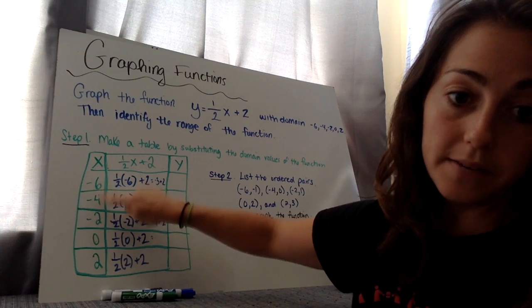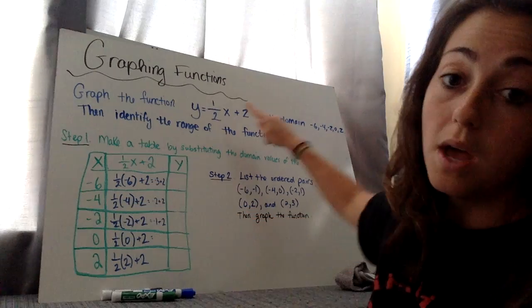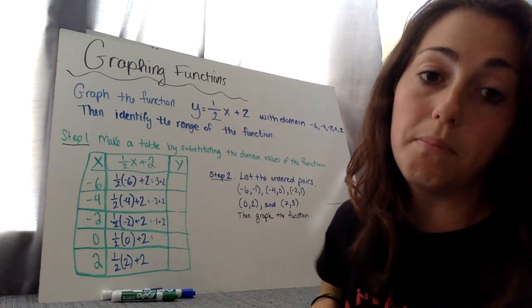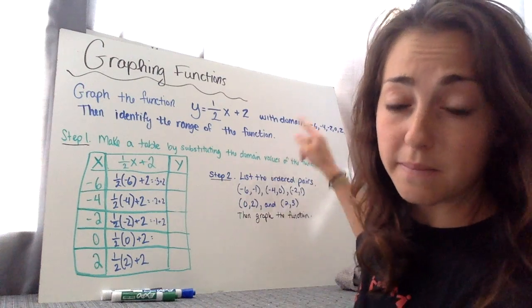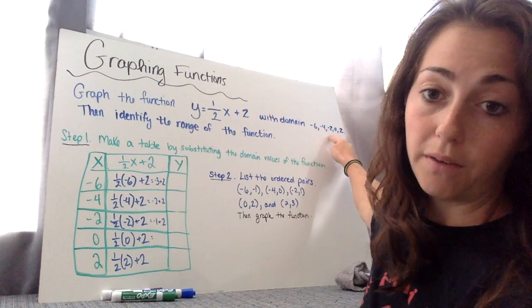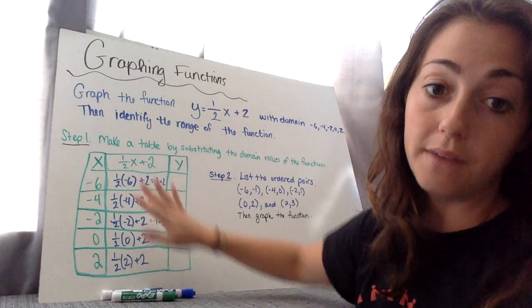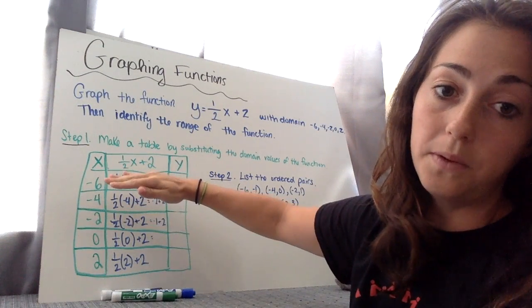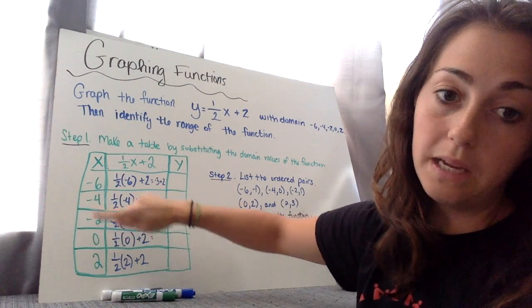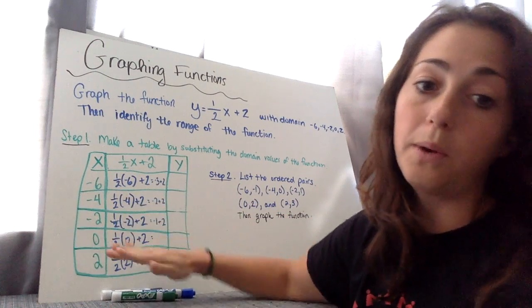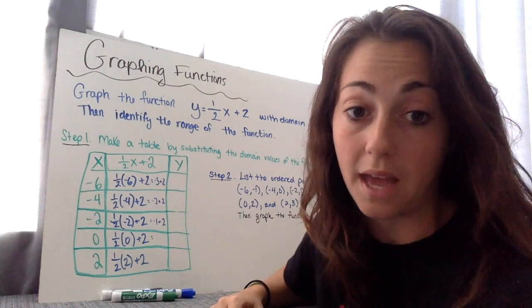So under x, I put negative 6, negative 4, negative 2, 0, and 2 because they told me to input those values with the domain. So I want you right now, make a table. After you wrote all this down, make a table, only put the green part of the table, the blue, I already started to fill out. And we're going to continue to fill it out together.